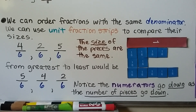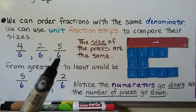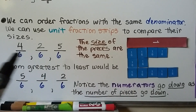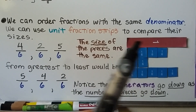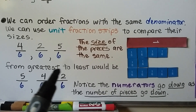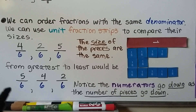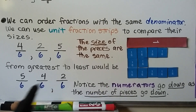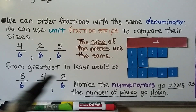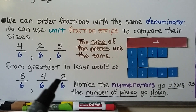We can order fractions with the same denominator using unit fraction strips to compare their sizes. Here we have four-sixths, two-sixths, and five-sixths — the same denominator means the pieces are the same size, so we use all one-sixth pieces. We need four of them for four-sixths, two of them for two-sixths, and five of them for five-sixths. Ordering from greatest to least: five-sixths is the longest and goes first, four-sixths is in the middle, and two-sixths is the shortest and goes last. The numerators get smaller — five, four, two — as we go from greatest to least. All the denominators are the same, so the size of the pieces are the same.